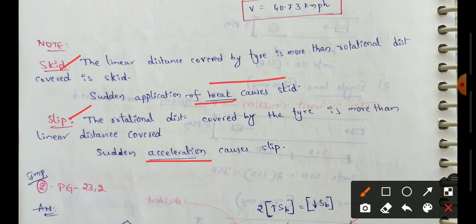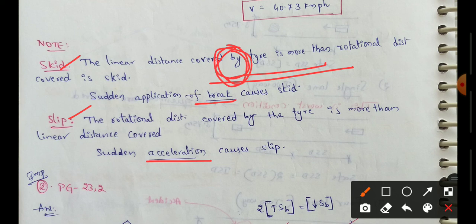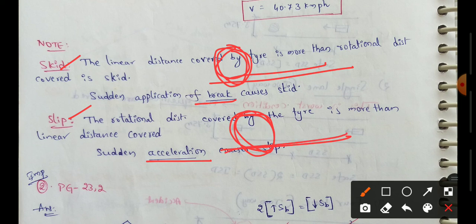When the vehicle is moving and we apply the brake, the tire rotation slows down but the vehicle continues moving linearly. Because the linear distance traveled is greater than the rotational distance, the tire slips — this is what we call skidding.